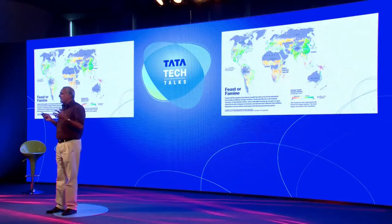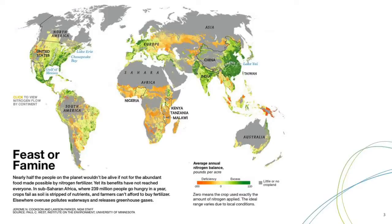This is the nitrogen balance map. The red areas are where the nitrogen removed from the soil is more than what is going back — meaning the soil is getting depleted. The light green areas are ideal, where there is a balance between removal due to crop cultivation and input. Nearly half the people on this planet wouldn't be here if productivity levels had not been increased to the levels we have today.